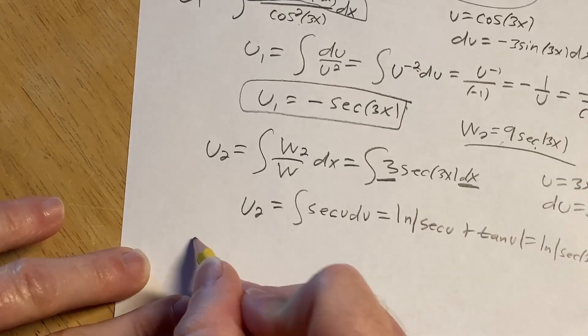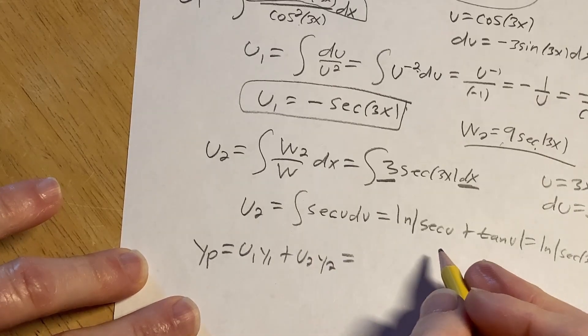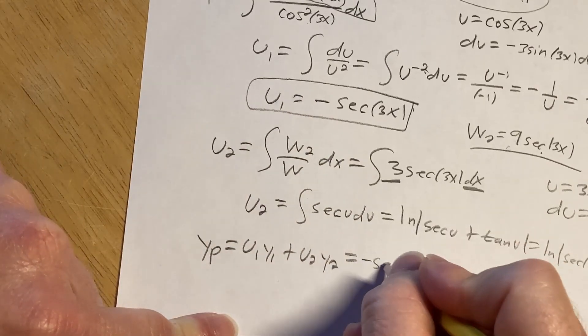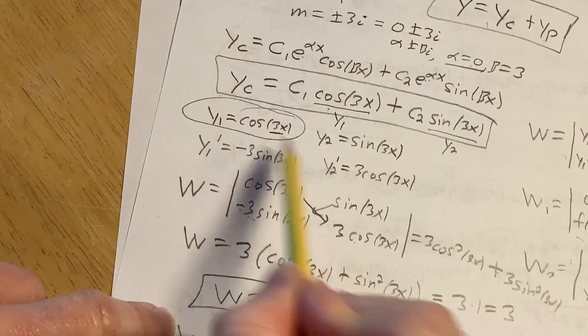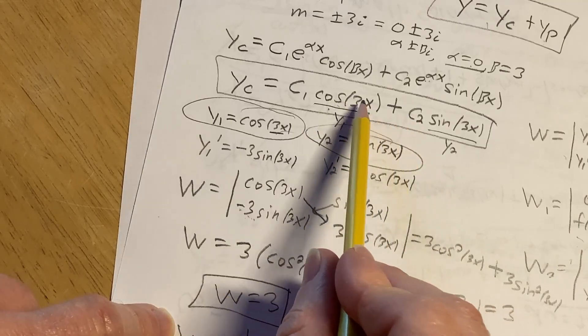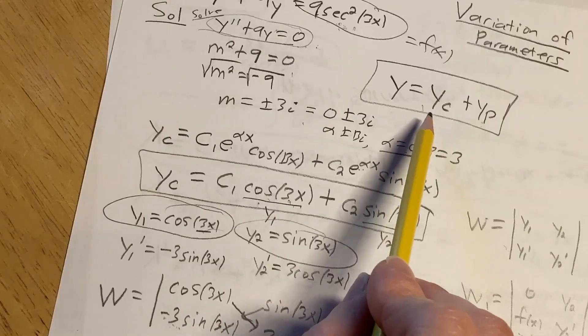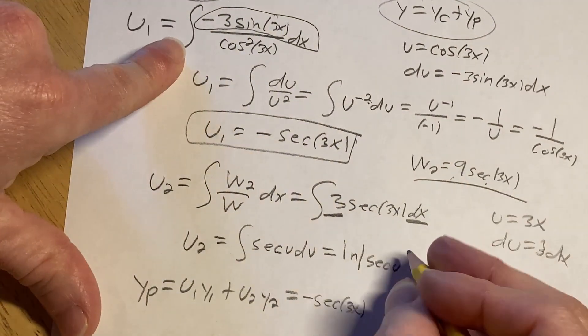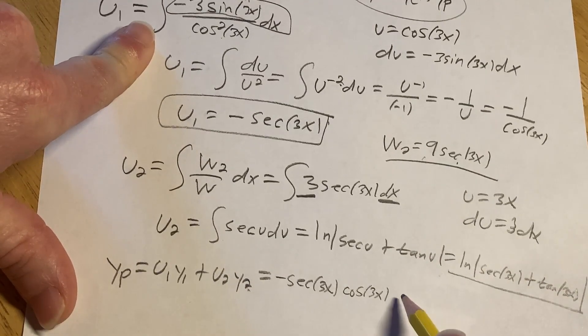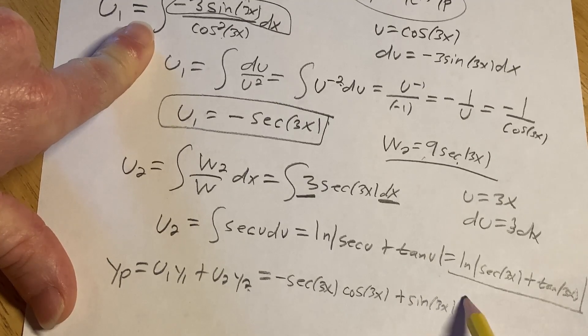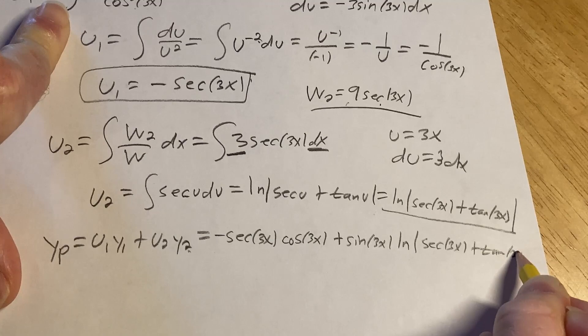So now we just need to write the answer down. So yp is u1 y1 plus u2 y2. So u1 is right here, negative secant 3x. y1 was given before. We chose it. We chose it as cosine 3x and y2 is sine 3x. We chose those when we found the complementary function. So y sub 1 is cosine 3x. And then u2 is this mess here, times y2, which is sine 3x.